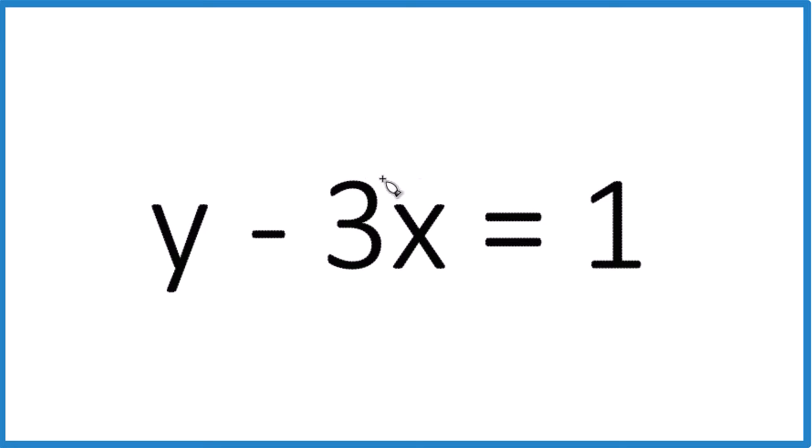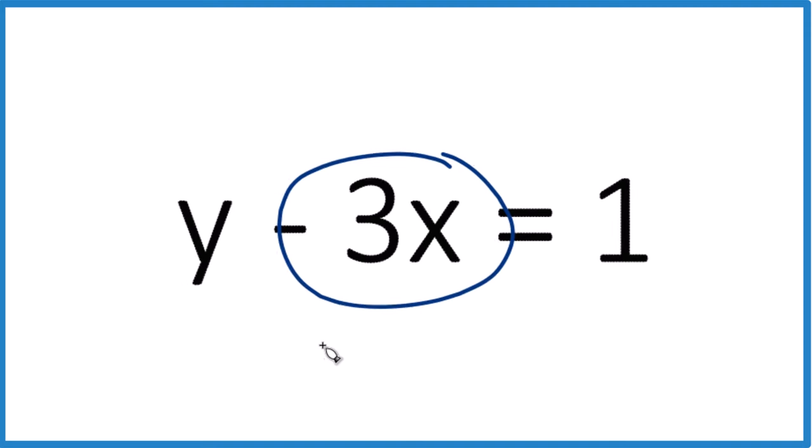So what we do to one side, we have to do to the other. So this negative 3x, if I could get rid of that, y would be by itself.